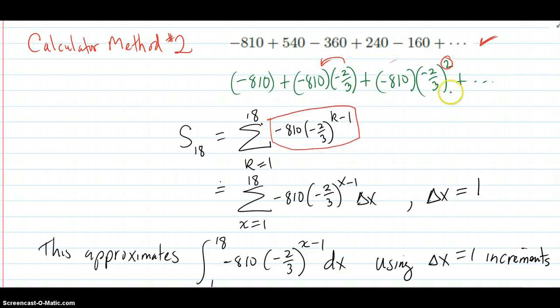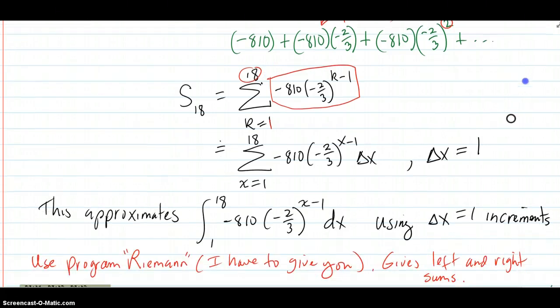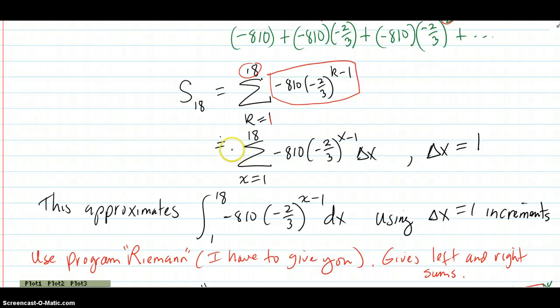And we're summing them up from 1 to 18 to get the sum of the first 18 terms. But that also can be written like this. And as long as delta x is 1, your change is 1 that you're incrementing, that starts looking like an integral.